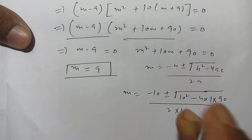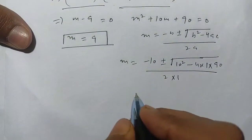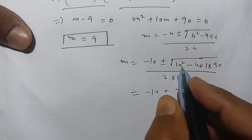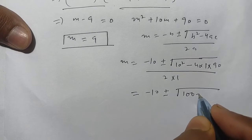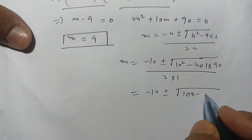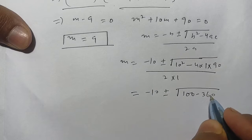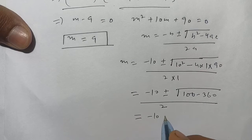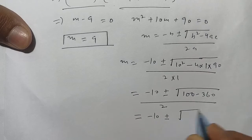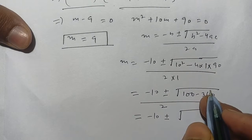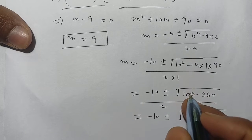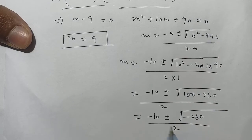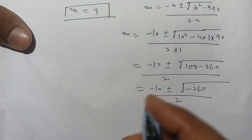Applying the formula, we get m = (-10 ± √(100 - 4 × 1 × 90)) / 2 = (-10 ± √(100 - 360)) / 2 = (-10 ± √(-260)) / 2.